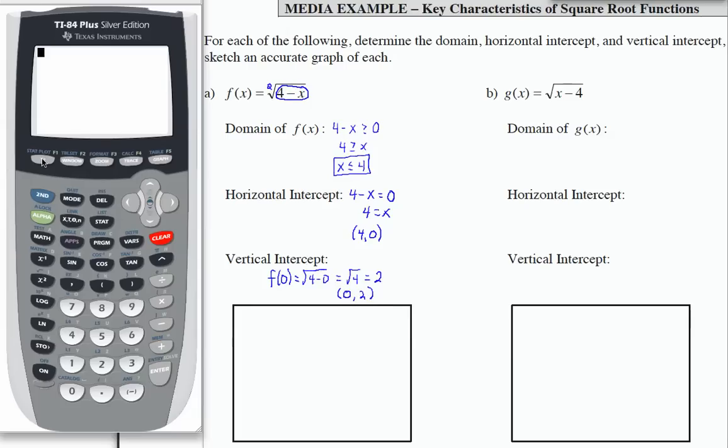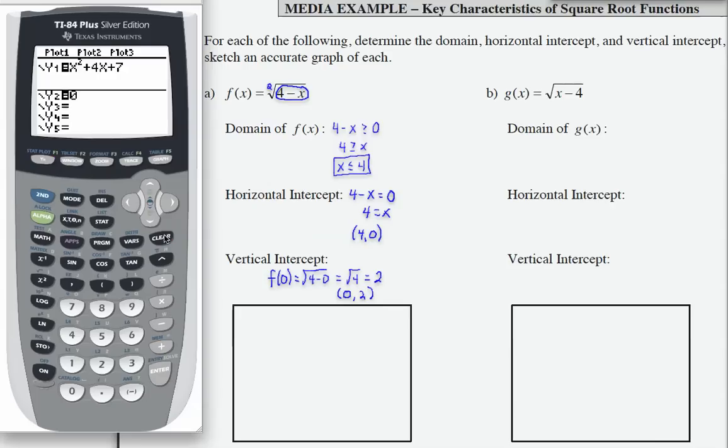Let's go over to our graph. Go to our y equals. Let's clear out anything that is in y1 and or y2. And let's enter the function f of x equals the square root of four minus x into y1. I'm going to use my arrows to end the radical after the x. Let me check my window. I'm going to make sure that my window is negative 10 to 10 for both x min negative 10, y min, and then x max and y max of 10. And let's press graph.